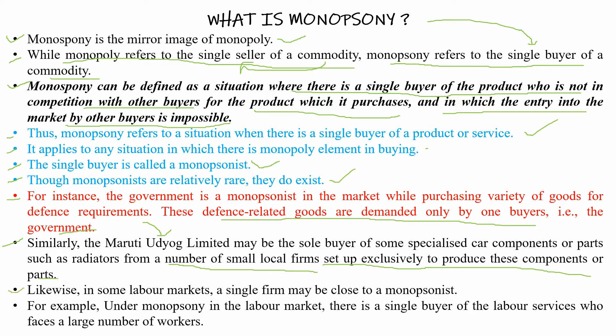Likewise, in some labor markets a single firm may be close to a monopsonist. In the labor market there are many different types of labor — painters, construction workers, and so on. There is a single buyer of labor services who faces a large number of workers. This makes it a monopsony in the labor market.